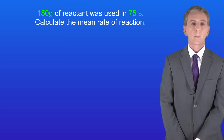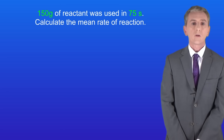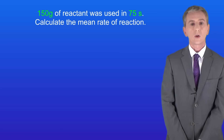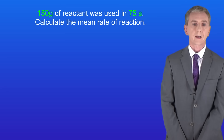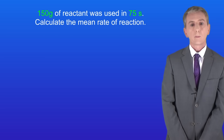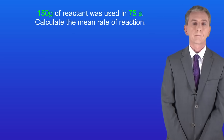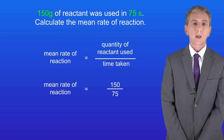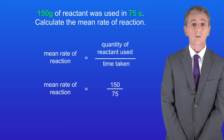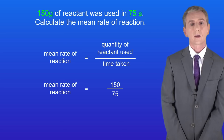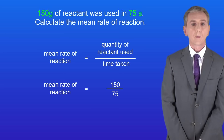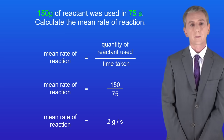Here's a question for you to try. 150 grams of reactant was used in 75 seconds — calculate the mean rate of reaction. Pause the video and try this yourself. The quantity of reactant used is 150 grams and the time taken is 75 seconds. Putting these into the equation gives us a mean rate of reaction of 2 grams per second.